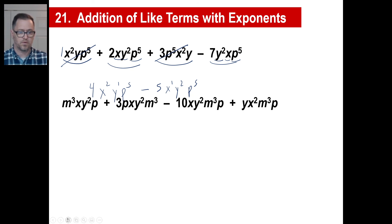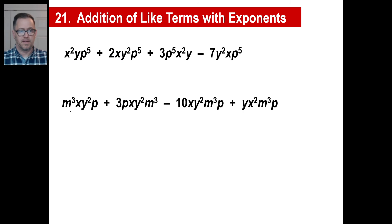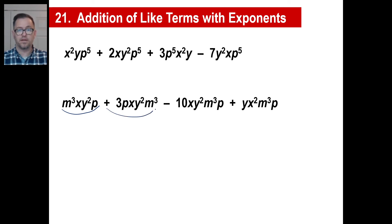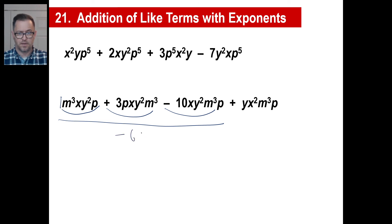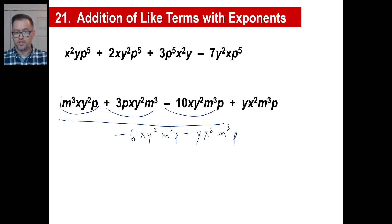Here's another one — pause and copy. Are there any like terms? Checking m to the third, x, y squared, p: yes, the second and third terms match the first. Scanning the fourth term — m to the third, x squared — nope, x squared doesn't match x to the first, so it's not like the others. We add 1, 3, and negative 10 to get negative 6, giving negative 6x y squared m to the third p. Then the leftover term stays separate.